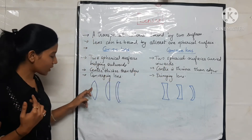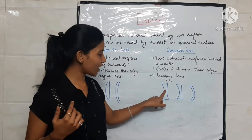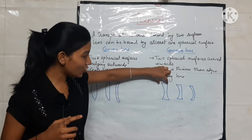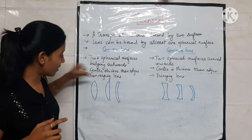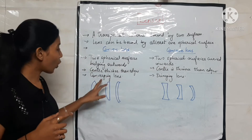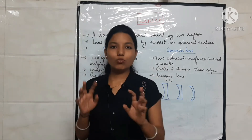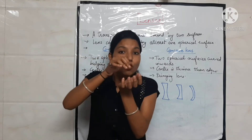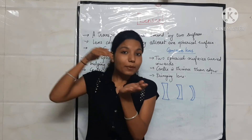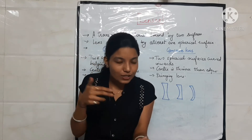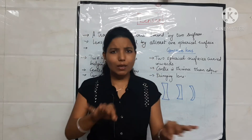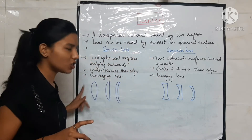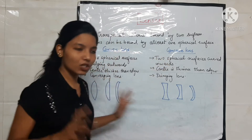Center is thicker for convex — look how thick the center is. For concave, center is thinner than the edges; the edge is thicker and the center is thinner. Now, why do we say converging lens and diverging lens? When light falls on a convex lens, using the techniques of refraction it converges. Just remember: convex is always a converging lens, and concave is a diverging lens.